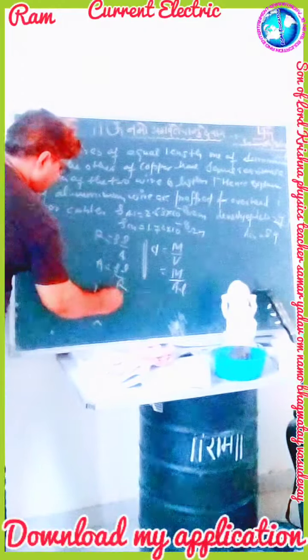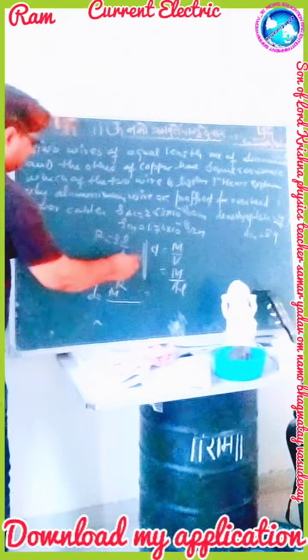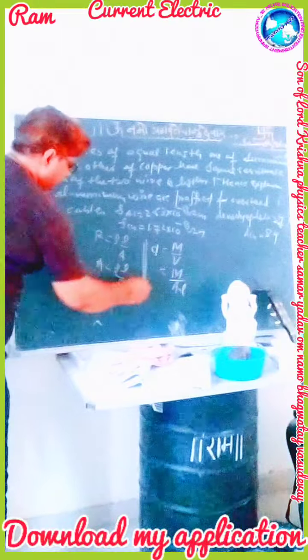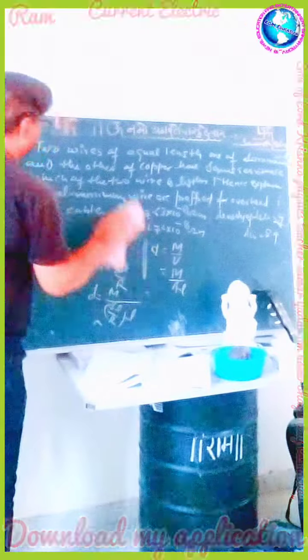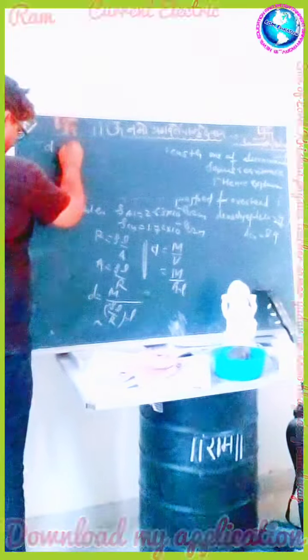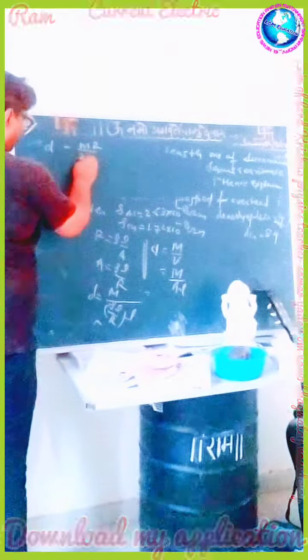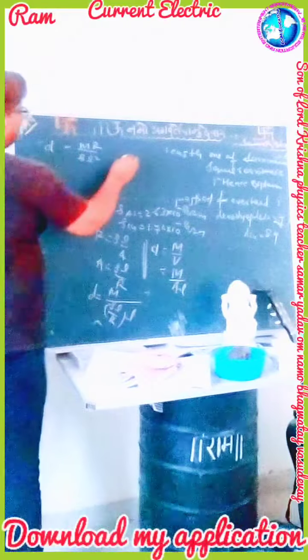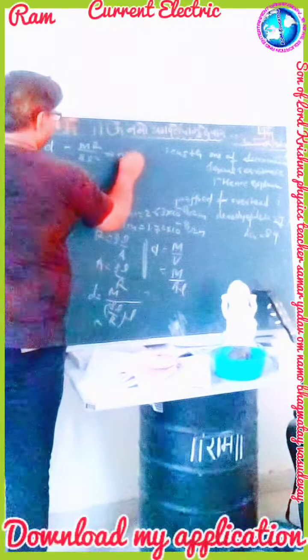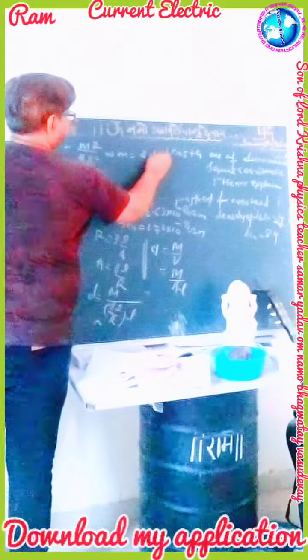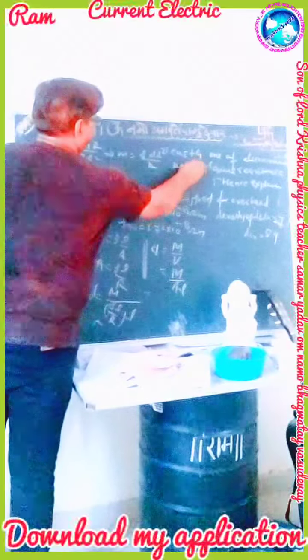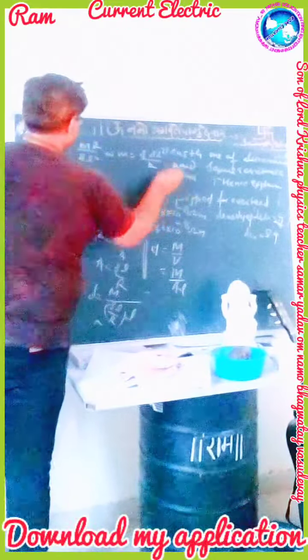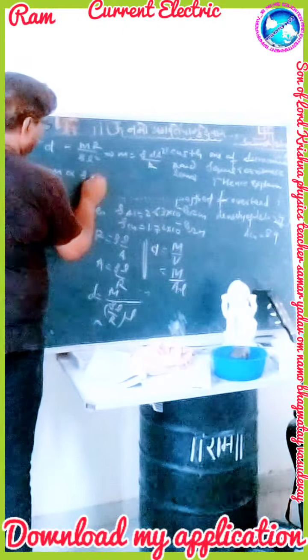Therefore D is equal to M upon A·L. Keeping the value of A, that is rho·L upon R, into L, and simplifying, we get D is equal to M upon rho·L². This implies that M is equal to rho·D·L² divided by R. Since R and L are constant, finally M is proportional to rho times D.